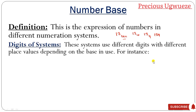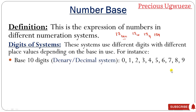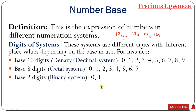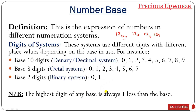In writing numbers, we make use of digits, so the digits of a given system are important. For base 10, you have 0 to 9 as the digits. The highest digit in base 10 is 9. For every number base, the highest digit is always 1 less than that base. Base 10 is also called the denary or decimal system, base 8 is called the octal system with highest digit 7, and for binary (base 2) the highest digit is 1.